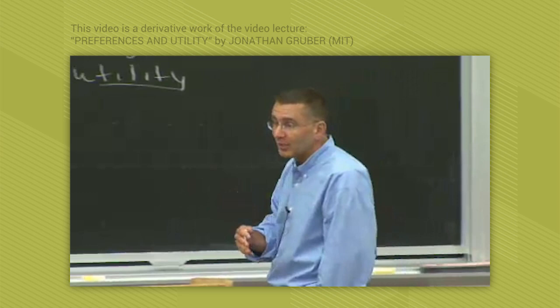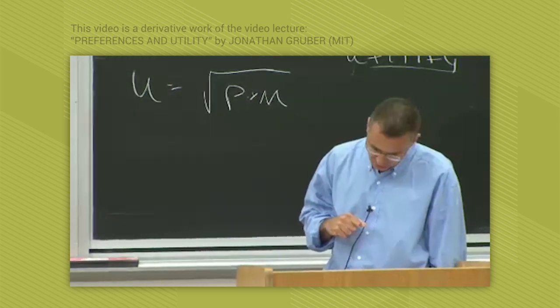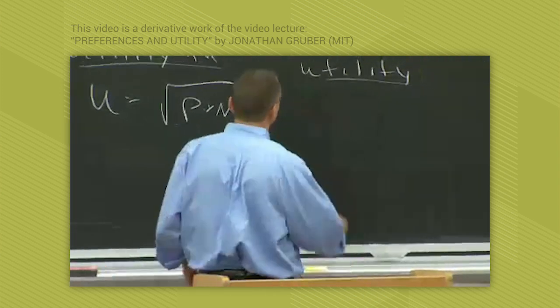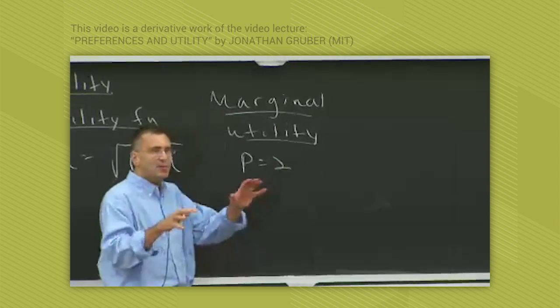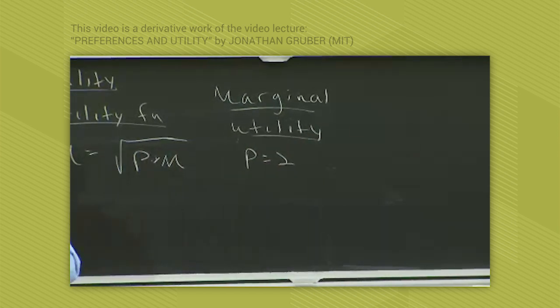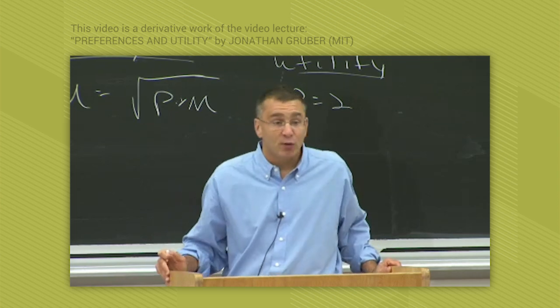If you don't want to put it in calculus terms, it's as you add each unit of one of the elements of the utility function, how does utility change? To see this, let's do an example. Imagine for a moment that you have two pizzas — P equals two. Now, how does your utility change as you see additional movies? What Figure 4-4 is showing is how your marginal utility for movies evolves, how your utility evolves as you get more movies, given that you have two pizzas.